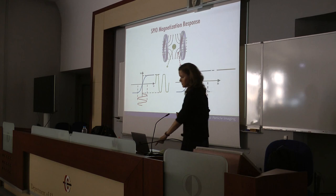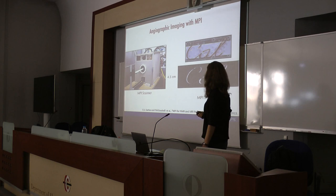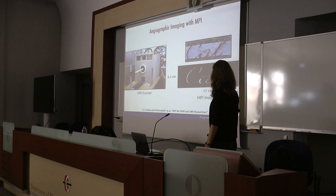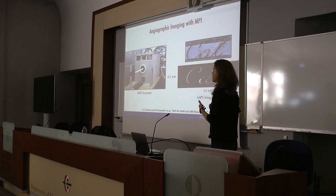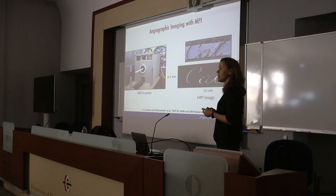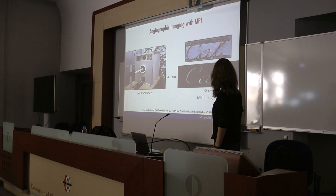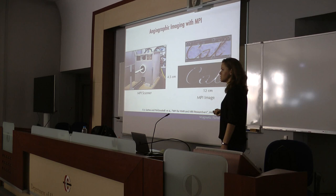Here is an example MPI image from an MPI scanner. There are two disk magnets in the scanner, one on each side. This is a phantom that mimics blood channels in the human body — imagine injecting iron oxide nanoparticles into blood vessels and imaging them with MPI. We can see that where there was a small air bubble — and therefore no nanoparticles — the corresponding MPI image shows no signal at that part of the channel. This means you could detect occluded blood vessels using MPI.